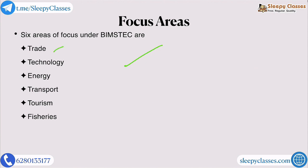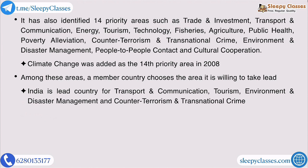The areas of cooperation include the six sectors — trade, technology, energy, transport, tourism, and fisheries — plus 14 priority areas. These 14 priority areas are: trade and investment, transport, communication, energy, tourism, technology, fisheries, agriculture, public health, poverty alleviation, counter-terrorism and transnational crime, environment and disaster management, people-to-people contact, and cultural cooperation.